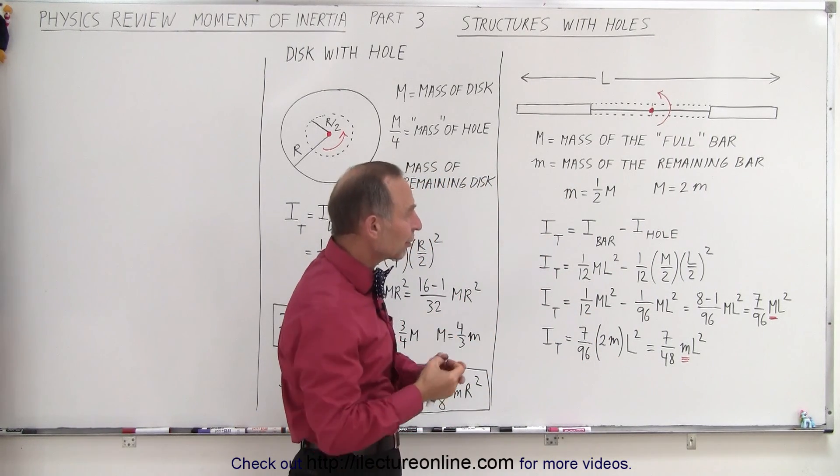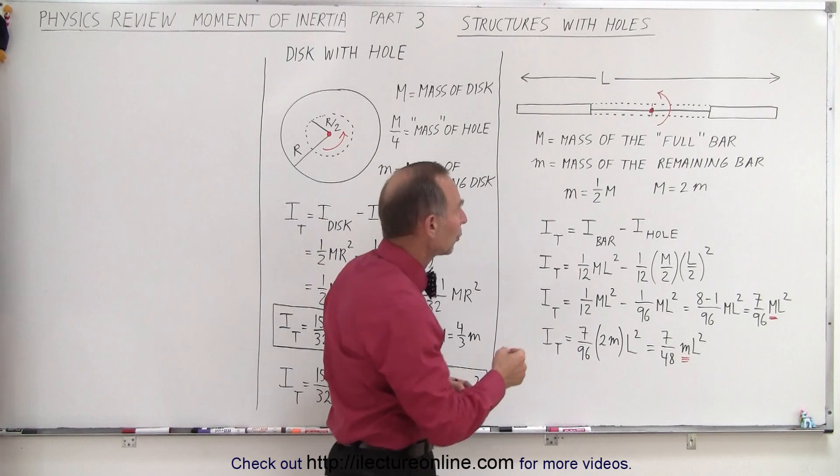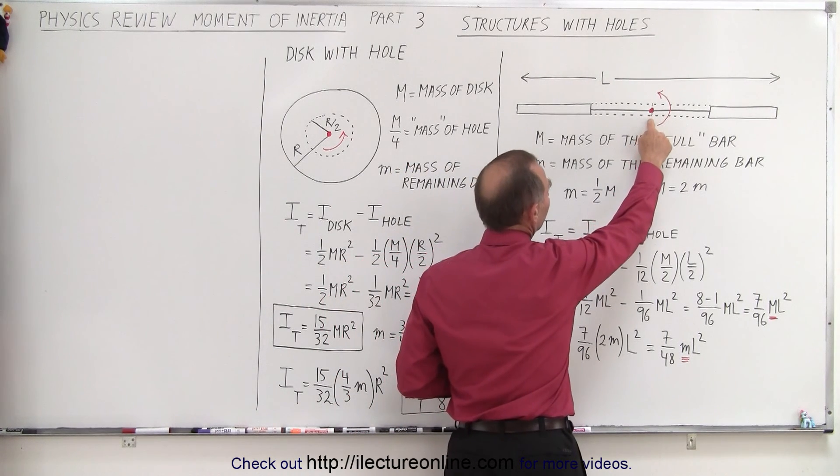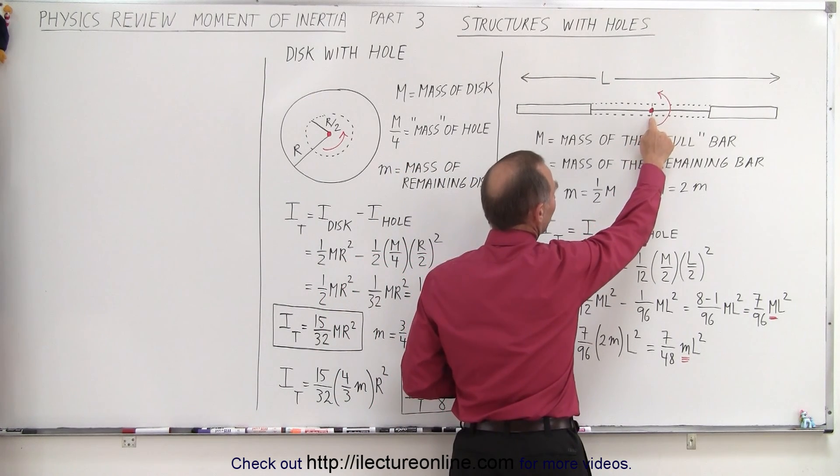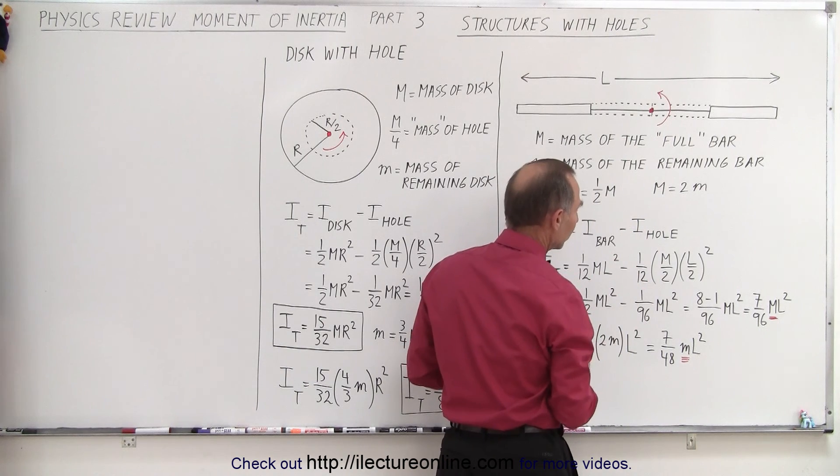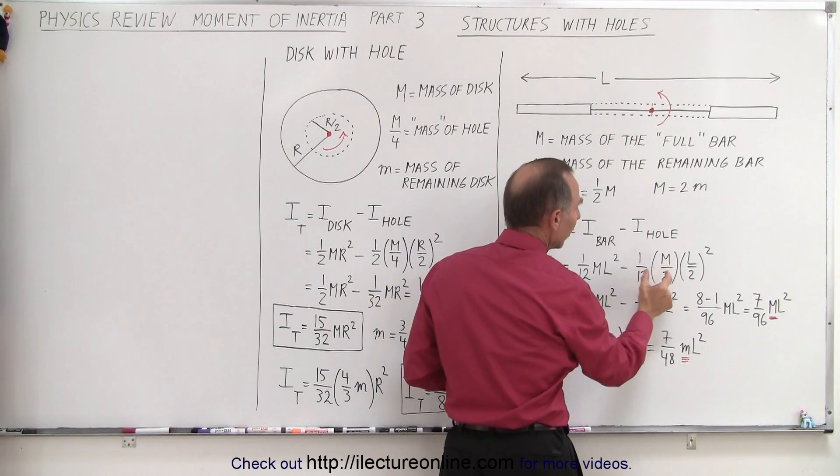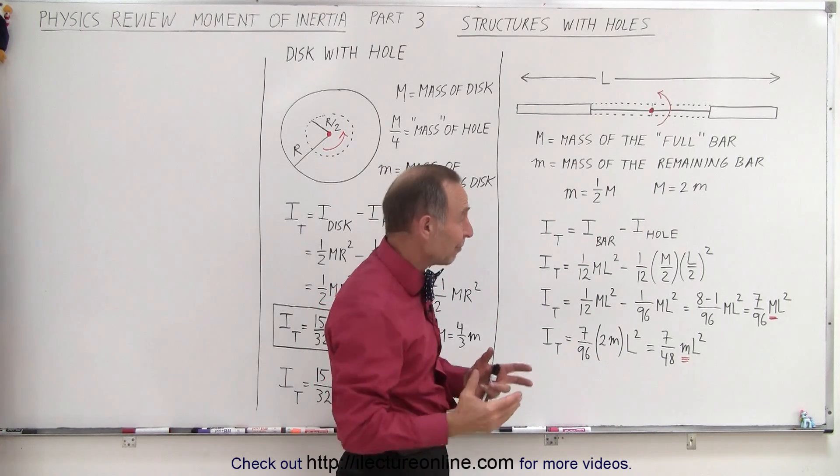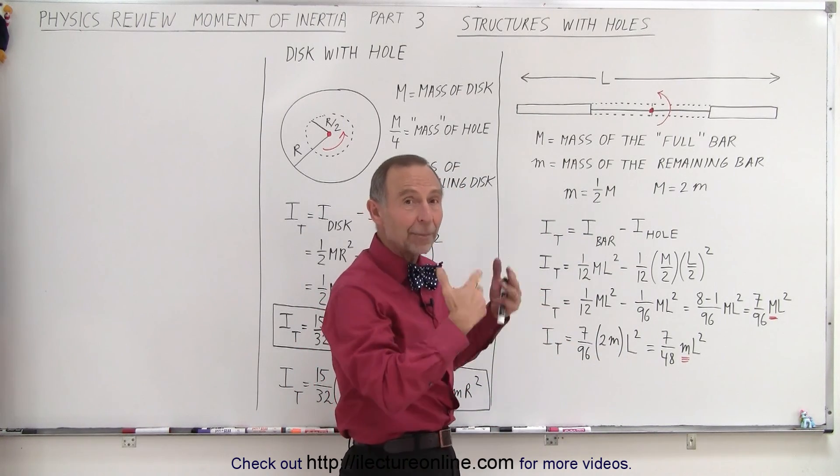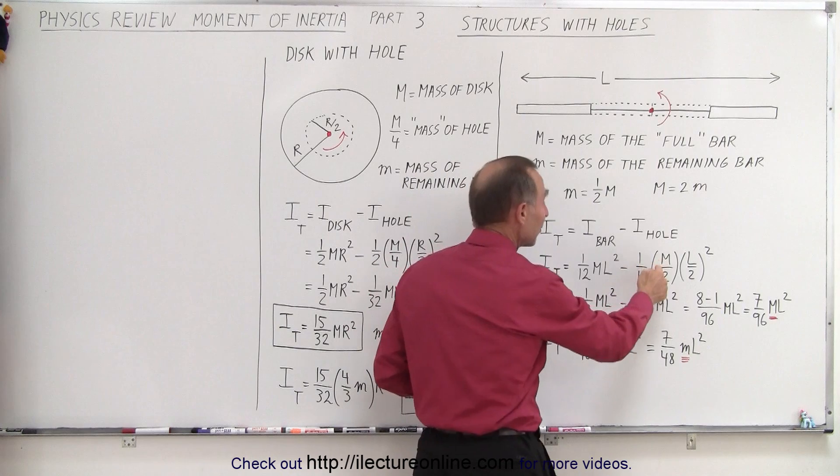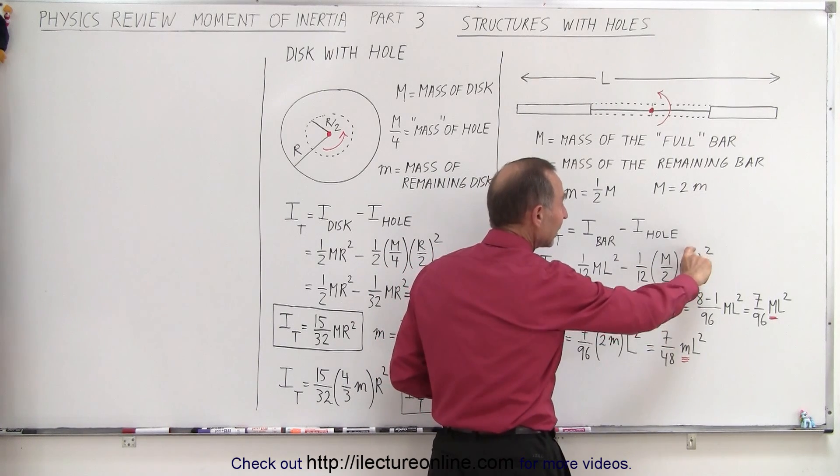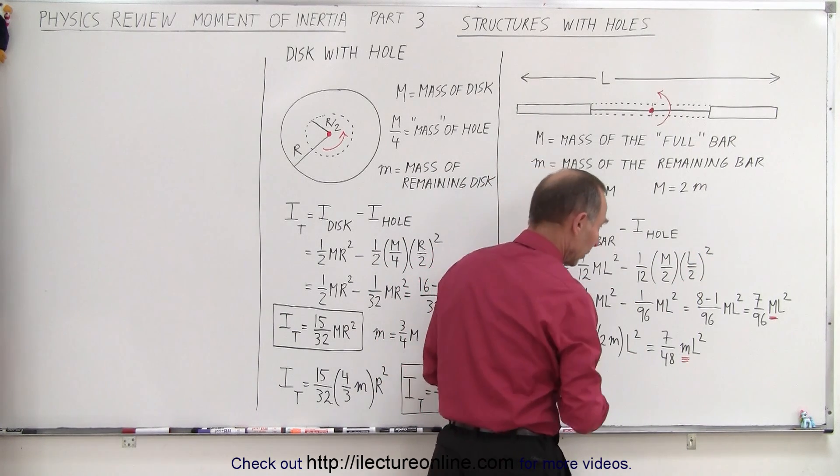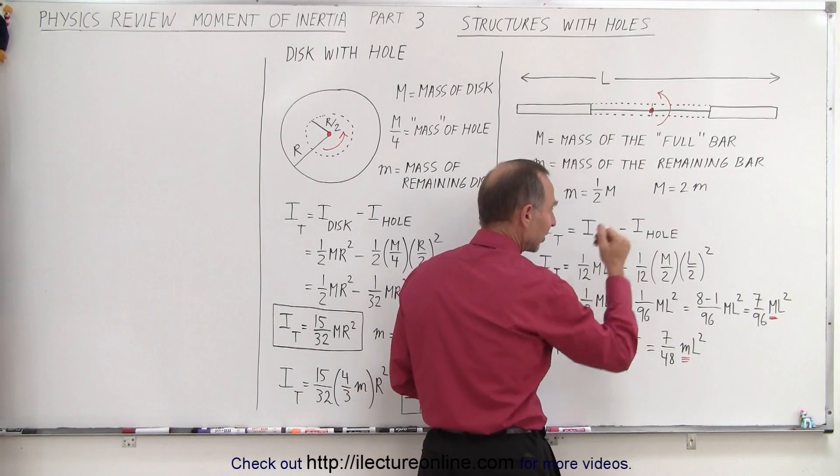So now we subtract from that the moment of inertia of the hole. Notice it's also centered. The center mass of the hole is right at the point of rotation. So it's 1/12 the mass of the hole. Now, of course, it's not there. Holes don't have mass, but if it was there, how much would the mass be? Well, it would be half the mass of the total bar, and the length of the hole is half the length of the total bar. So it's 1/2 the mass times the length squared.